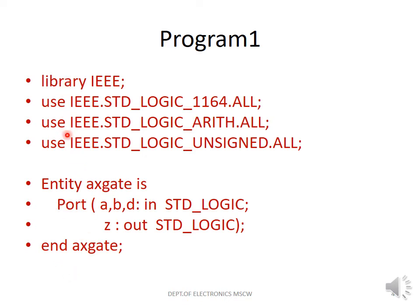We have written the library files. The entity part contains the inputs and the outputs. The inputs you are seeing in the circuit are A, B, and D, and Z is the output. These are of the type standard logic, and that is the name of the entity.